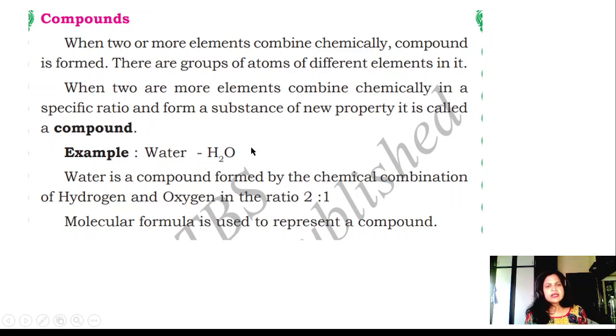For example, water. In water, hydrogen and oxygen, two elements are there - atoms of two elements. Hydrogen, two atoms; oxygen, one atom, chemically combined together forms water. Water is a compound formed by the chemical combination of hydrogen and oxygen in the ratio 2 is to 1.